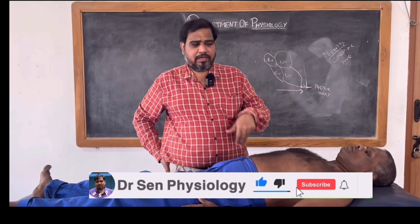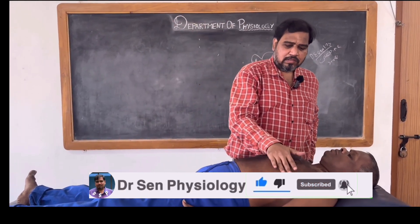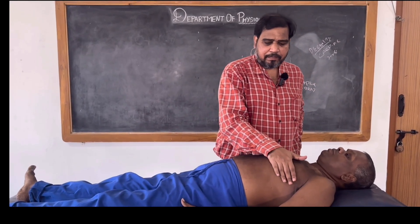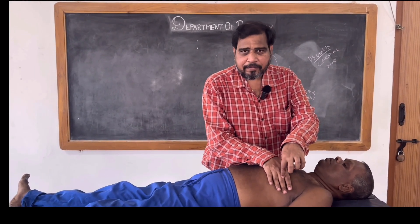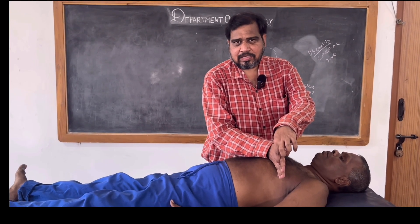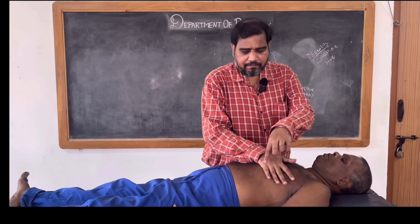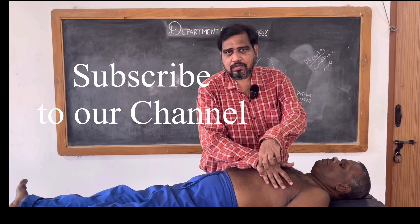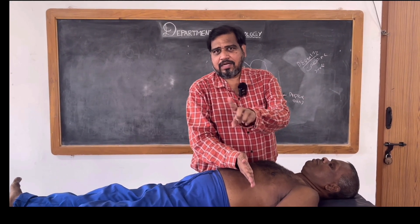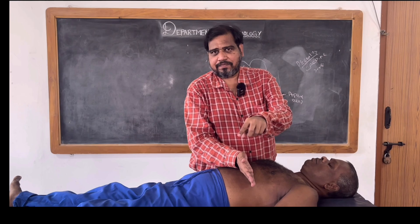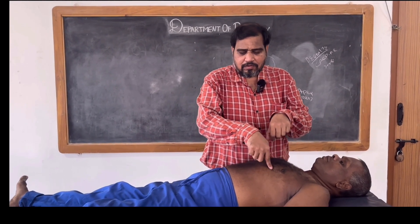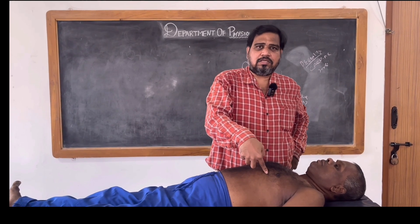Let me quickly repeat. First step: entire palm — approximately around the fourth or fifth intercostal space. Second step: ulnar border — this will vary depending on where you feel the impulse. Third step: pointing finger. I hope you are able to understand how to go from the first step to the second step. The ulnar border is the second step, then once I feel the impulse, I keep the pointing finger — that is the third step.